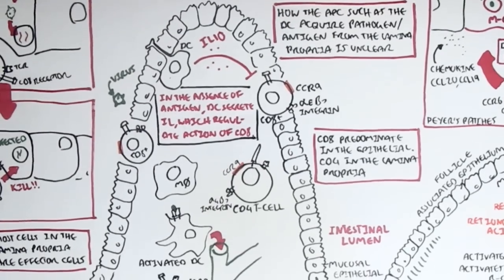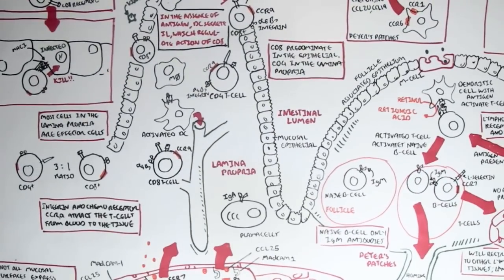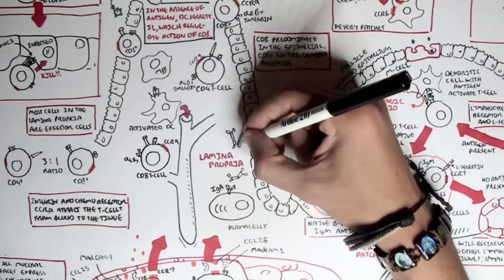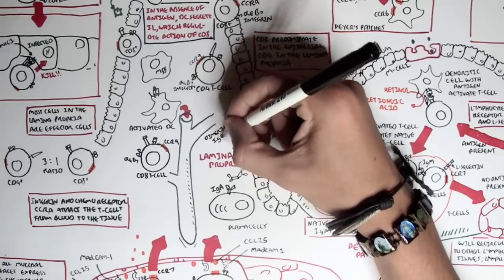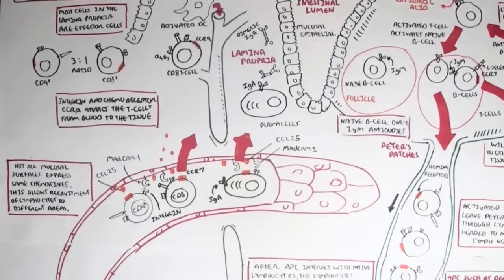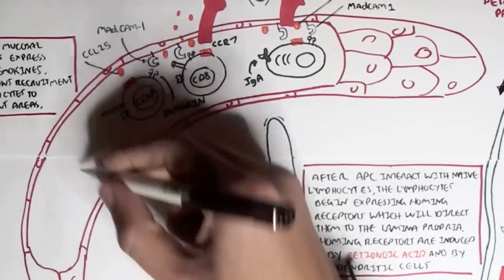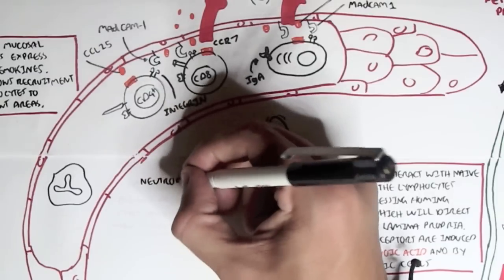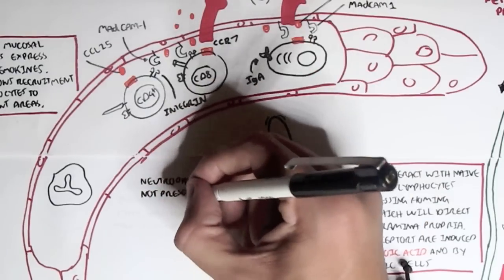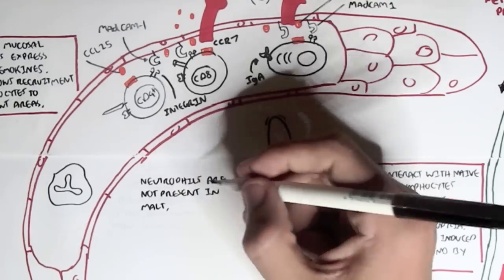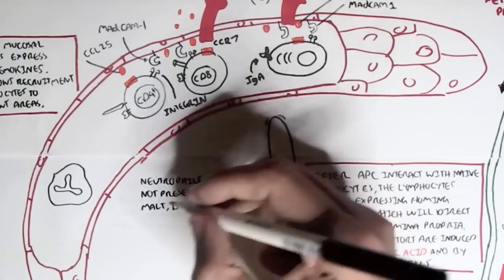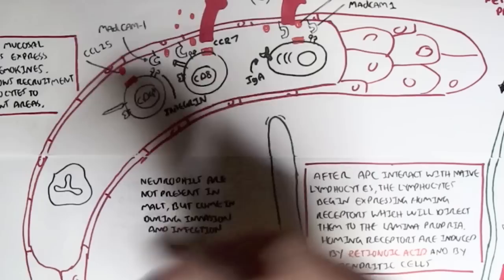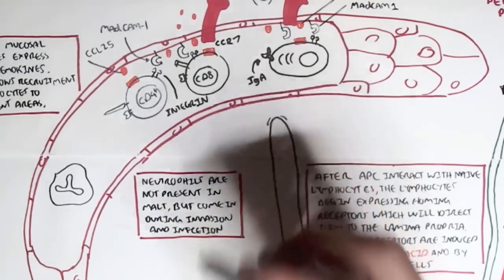As mentioned, the plasma cells secrete IgA dimeric antibodies. Another important point is that we do not find neutrophils, the granulocytes, within the lamina propria or around the connective tissue beneath the mucosal layer. This is because neutrophils are very self-damaging, so they are usually found within the bloodstream. Neutrophils are not present in the mucosal-associated lymphoid tissues, but they are recruited during invasion and infection because they are important in phagocytizing antigens and pathogens.